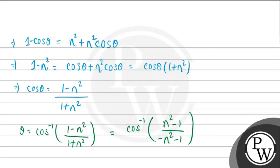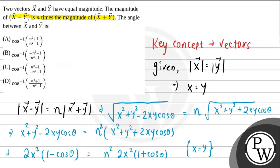So the final answer of this question is option C: cos inverse (n² - 1)/(-(n² - 1)). Hope you understand.